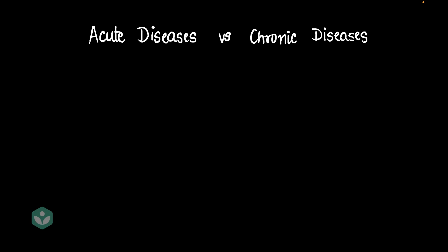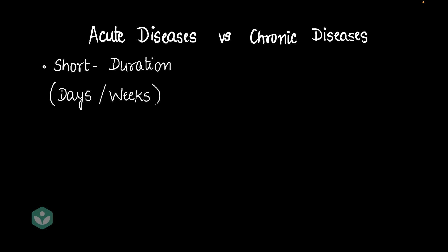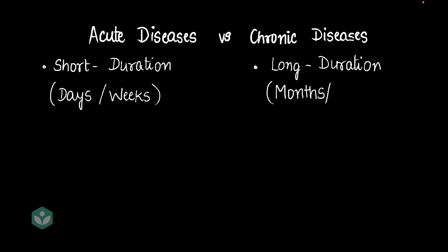Acute diseases are mostly short-duration diseases. They last for a few days to, at the max, a few weeks. Whereas chronic diseases are long-duration diseases. These last for a few months to a few years, and could even last the entire lifetime of a person.